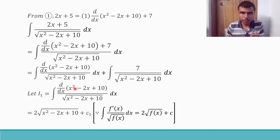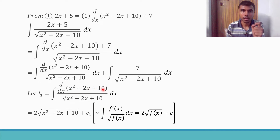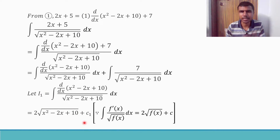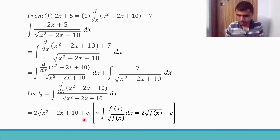Here f(x) = x² - 2x + 10, and f'(x) is in the numerator, so by the property the integral equals 2√(x² - 2x + 10) + C₁. That completes I₁. Now for I₂: I₂ = integral of 7 / √(x² - 2x + 10) dx. The 7 is a constant and I keep it outside the integral.